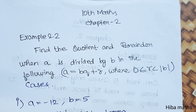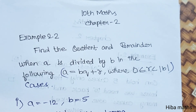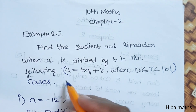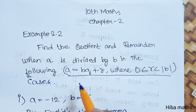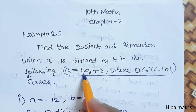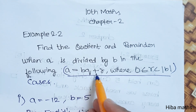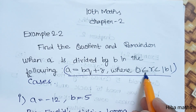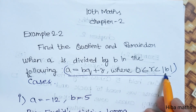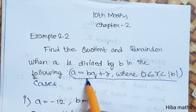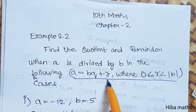Hello students, welcome to Hibamax 10 Standard, Chapter 2, Example 2.2: Find the quotient and remainder when a is divided by b in the following cases. Three questions are asked, so we can use the Euclidean Division Algorithm method. By EDA, a is equal to bq plus r, where r should be greater than or equal to 0 and less than b. Here, a is the dividend, b is the divisor, q is the quotient, and r is the remainder.